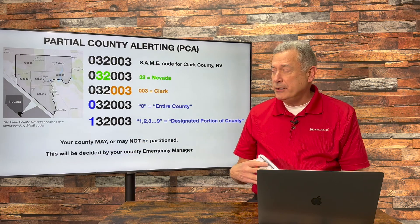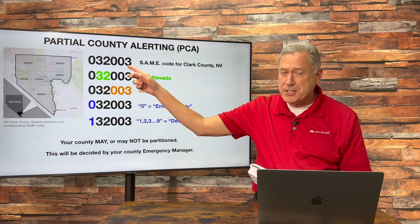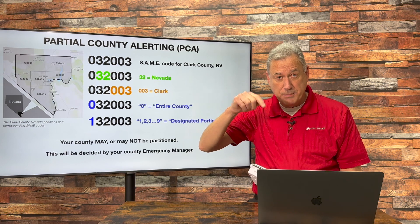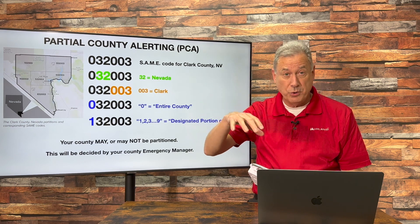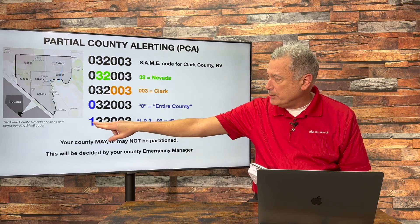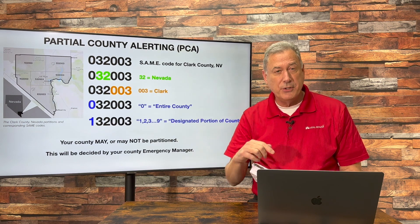Partial county alerting basically is going to bring up your SAME code for your county — the specific area message encoding code for your county. And we're going to adjust the first digit of it. Here's how to do it.